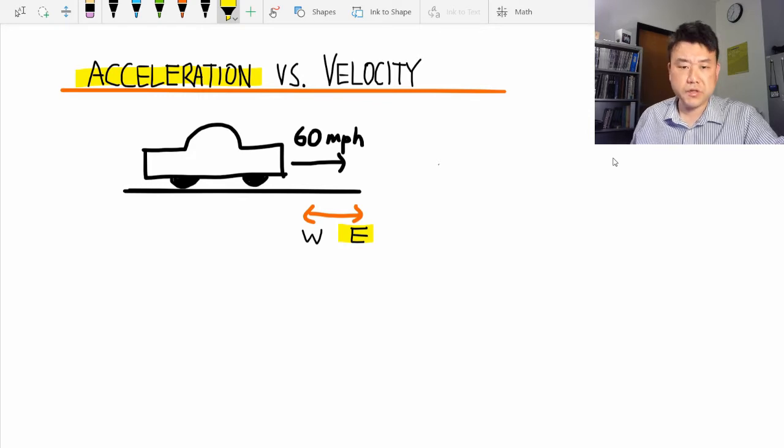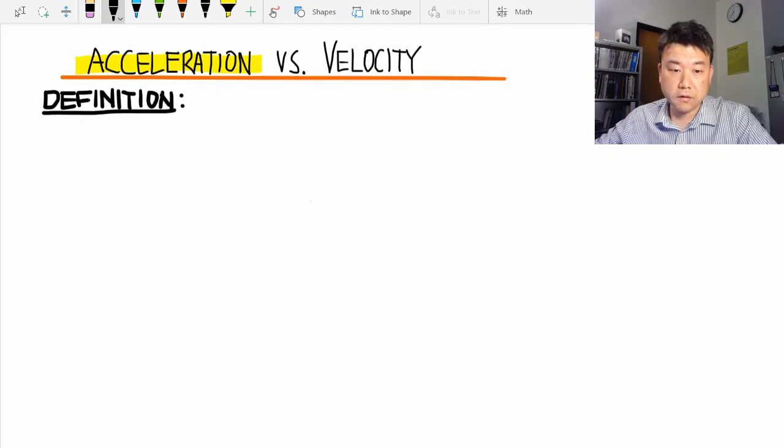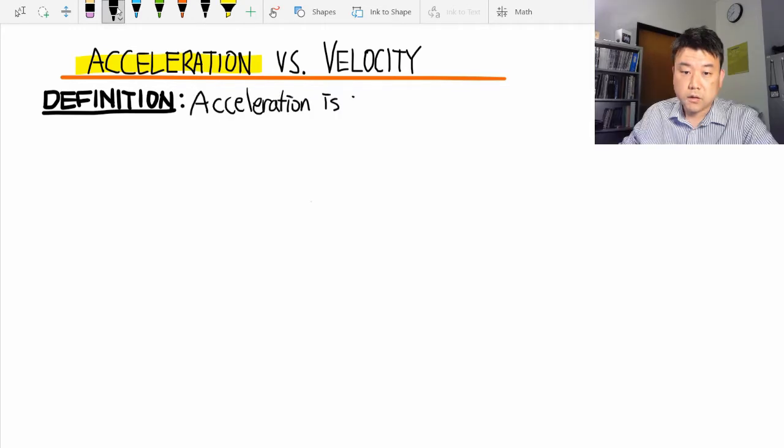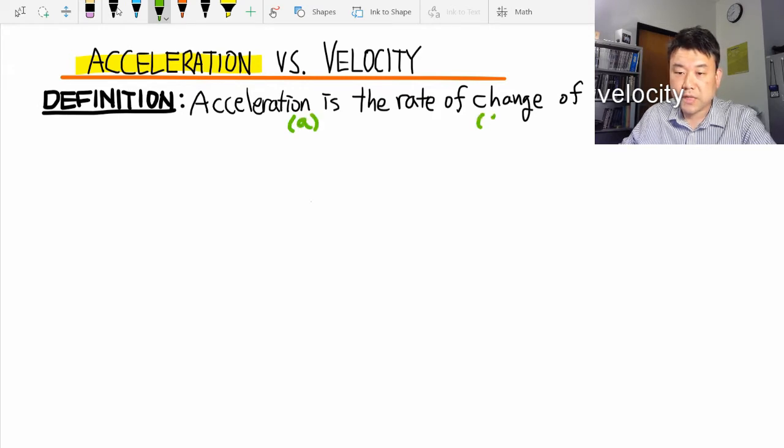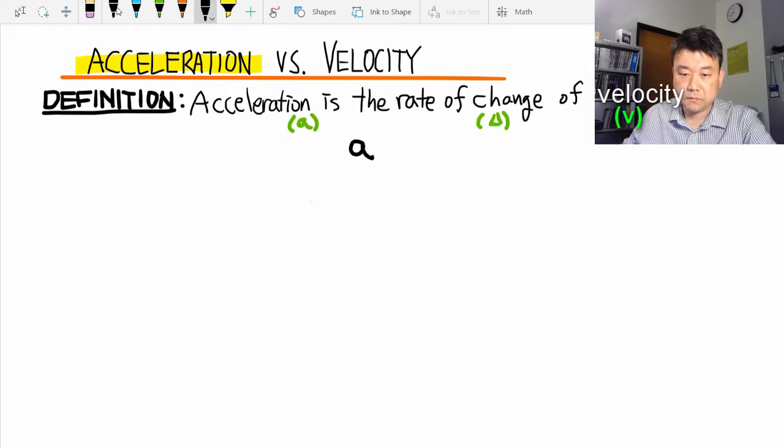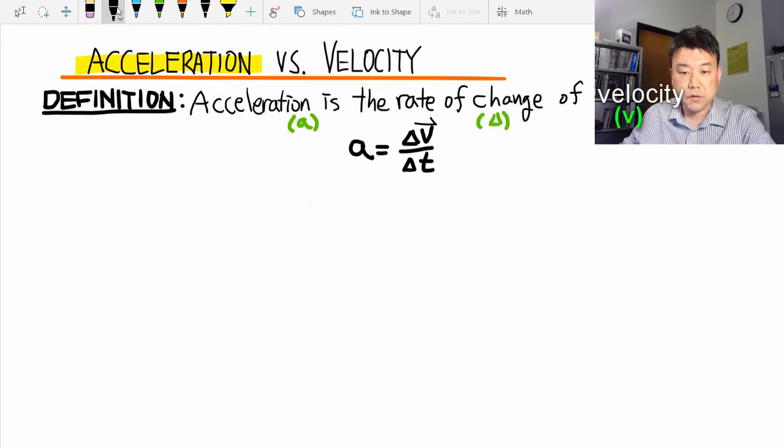So let's start with the definition. Acceleration is defined as the rate of change of velocity, or using symbols to express the same idea more succinctly, we would say acceleration is equal to how much velocity changes in a given amount of time: a = Δv/Δt. And if we are being picky, we need to be careful about velocity being a vector. It has direction, so acceleration is also a vector with direction.